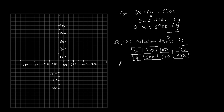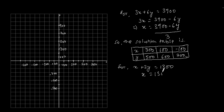Now let's make the solution table for Equation 2: x + 2y = 1300. This implies x = 1300 - 2y. So the solution table is built by putting random values for y to find x.